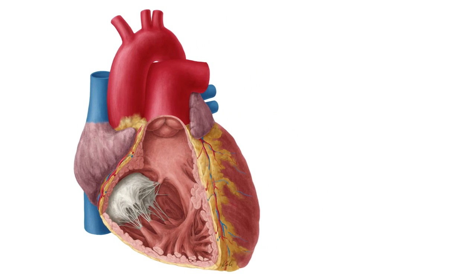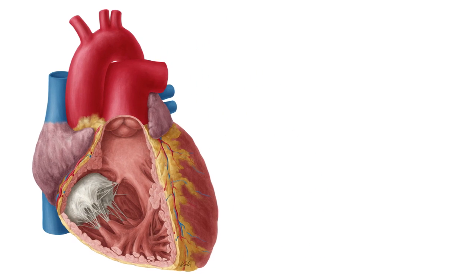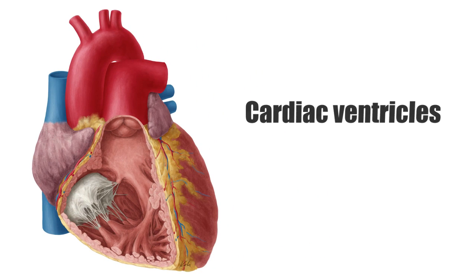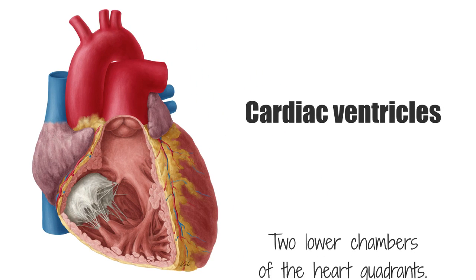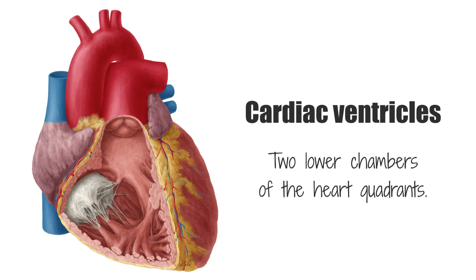The cardiac ventricles are the two lower chambers of the heart. They are larger and more apically narrowed than the atria. Collecting the blood that flows into them from the atria, they then contract and force the accumulated blood volume out into the peripheral tissues via the major vessels.